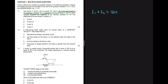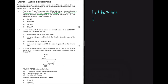If F1 and F2 act in opposite directions, the magnitude of the minimum resultant is 3 newtons. So if F2 is greater than F1, we get F2 minus F1 equals 3 newtons. That's what we get from the statement.